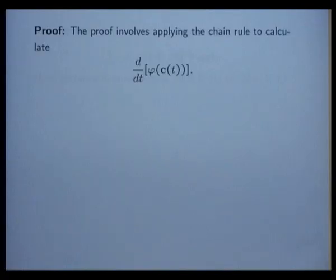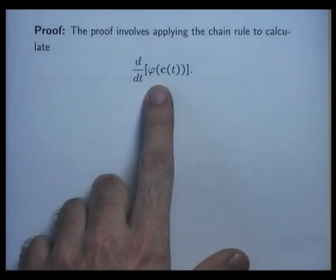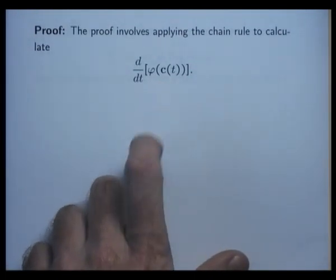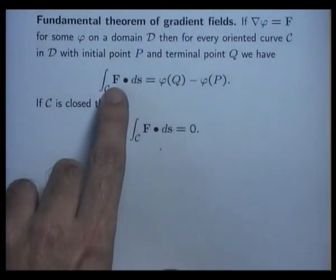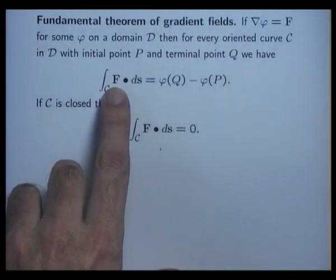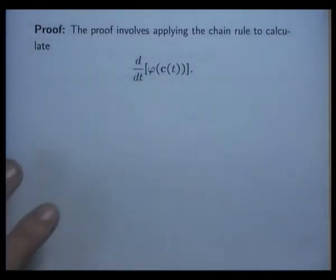So we apply the chain rule for paths to look at this derivative. Essentially, what we want to do is turn our integrand into the derivative of something.